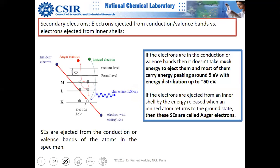Secondary electrons are ejected from the conduction or valence band of the specimen. This means you do not need much energy — that is the advantage here.